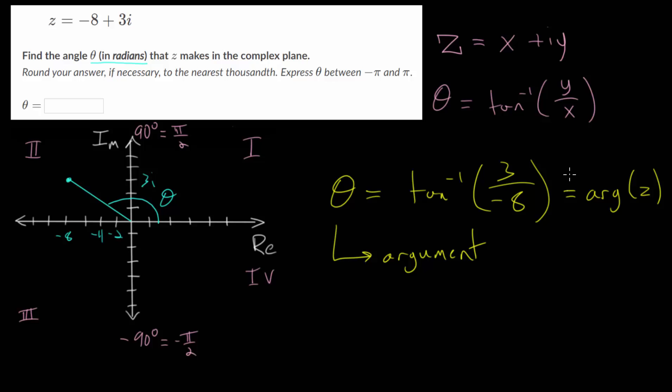And at this point, we just need to plug in this formula into our calculator. And we need to be careful, since we want the answer in radians. So make sure that your calculator is in radian mode. And when we plug this in, we get that theta is approximately, we'll have to round to the nearest thousandth, minus 0.3587, which means we'll round this to minus 0.359.